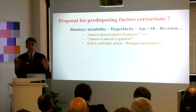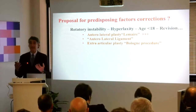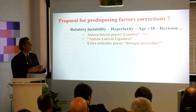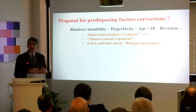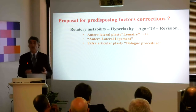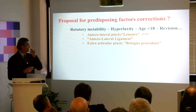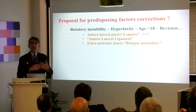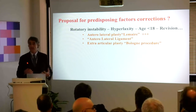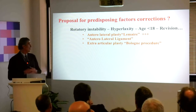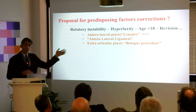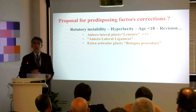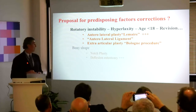About those predisposing factors, we can correct them sometimes. The rotatory instability, hyperlaxity, age under 18 — these are very important. For revision cases, the solution for us is definitely the anterolateral plasty, the modified Lemaire, and we use that most of the time. In Bologna they also have a very similar technique which works so well for many, many years.